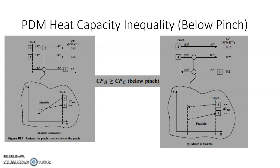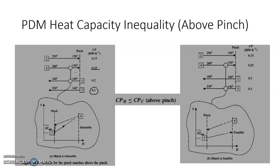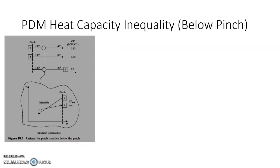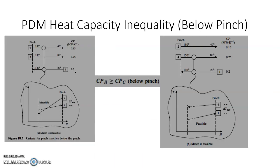To summarize: above pinch, CP hot must be less than or equal to CP cold; below pinch, CP hot must be greater than or equal to CP cold. If these conditions are not met, streams must be split accordingly — similar to how we split streams for the number-of-streams rule. There is one algorithm for above pinch and one for below pinch, which we will discuss next.